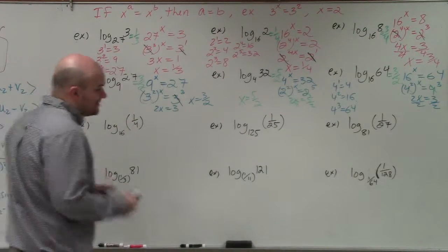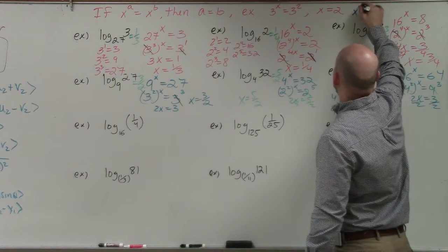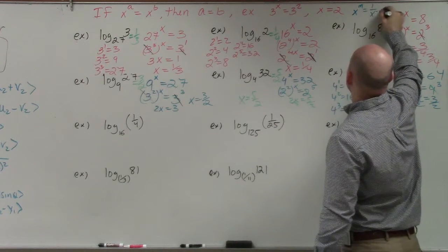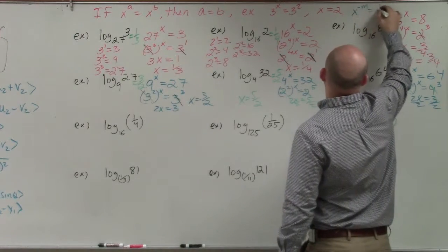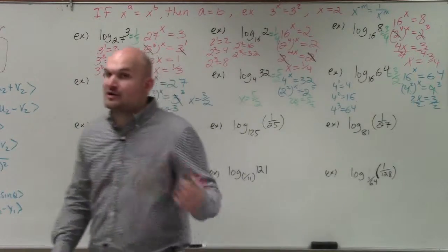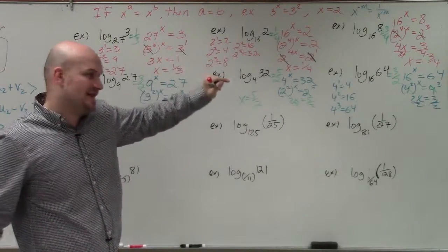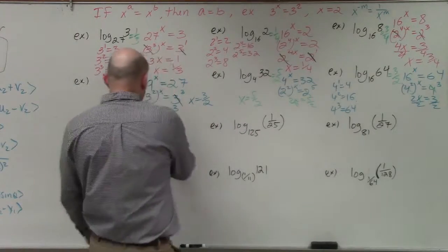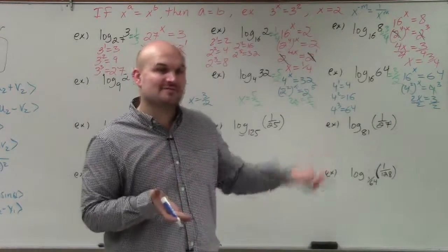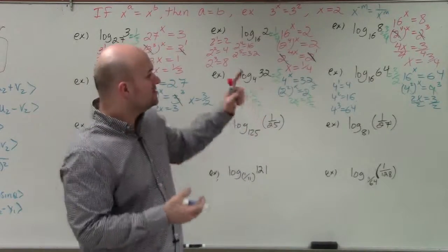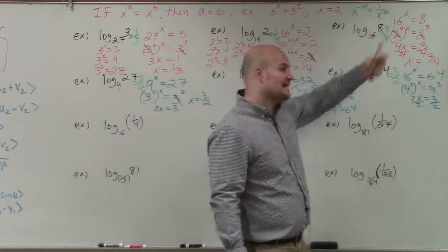Now we're dealing with fractions, and the key rule is the negative exponent rule: x to the negative m equals 1 over x to the m. When we first learned about negative powers, we said that x raised to a negative exponent equals 1 over x to the m. All of these terms are raised to the first power but they're in the denominator. To move them to the numerator, the exponent becomes negative.